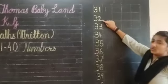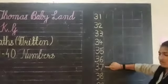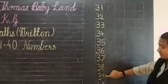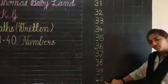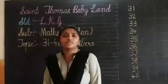31, 32, 33, 34, 35, 36, 37, 38, 39, and 40. Okay, so these are our 31 to 40 numbers.